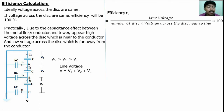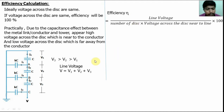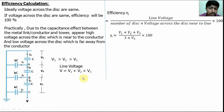The efficiency is related to the voltage across the disks. If the voltage across all disks is equal, efficiency is 100%. The efficiency formula is: Efficiency = Line Voltage divided by (Number of disks × voltage of the disk nearest to the line conductor). Here, line voltage equals V1 + V2 + V3, number of disks is 3, and the disk nearest to the line is V3.